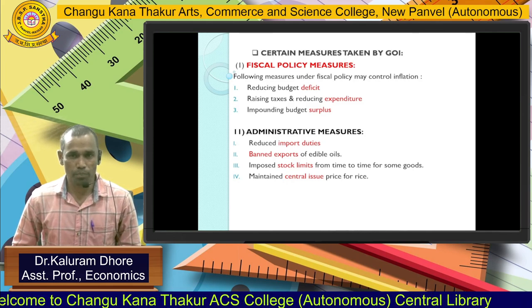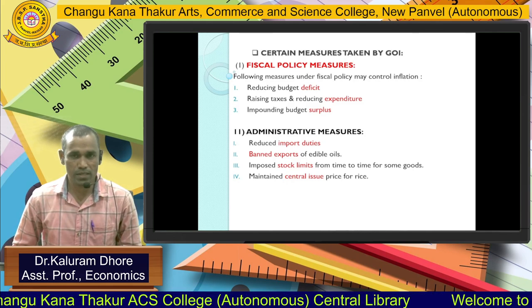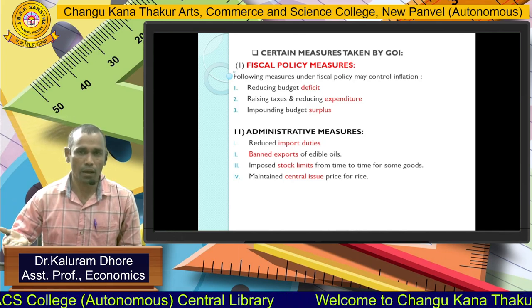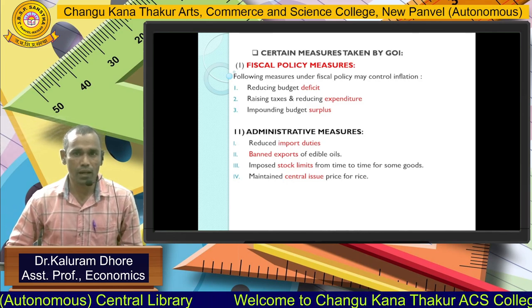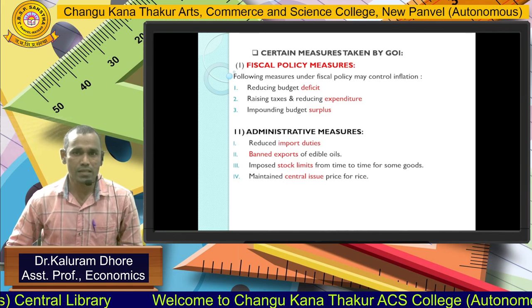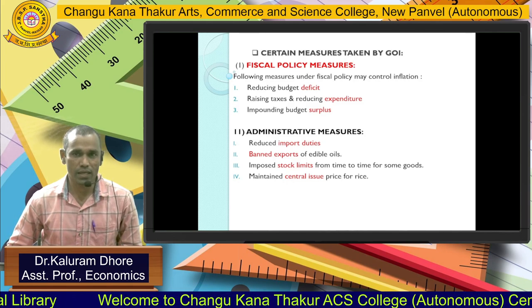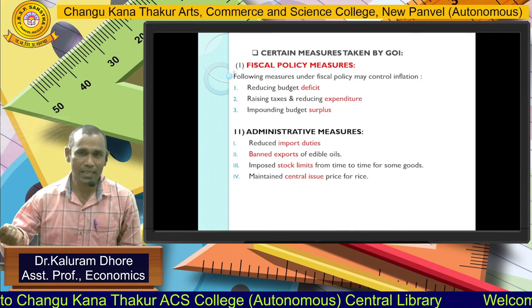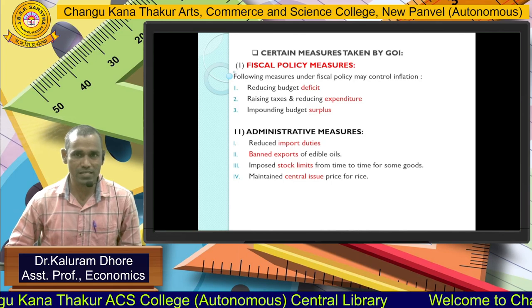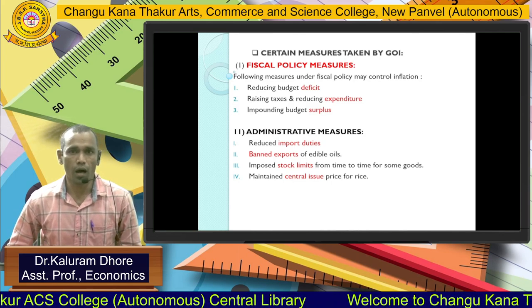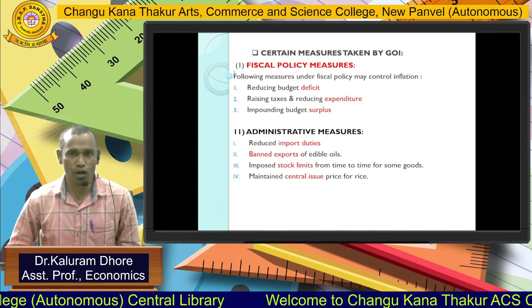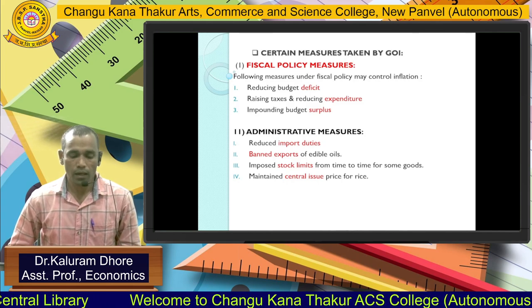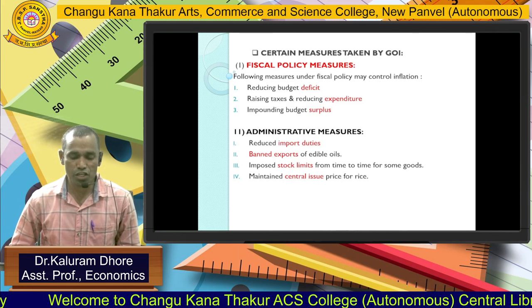Third point: impounding budget surplus. Impounding budget surplus means the government must not only maintain but also increase their surplus. Government revenue exceeding expenditure is known as budget surplus. Through that, the government keeps control on inflation, which is an important part from RBI's point of view. Another category is administrative measures, which is the most important part we are going to discuss in this slide.